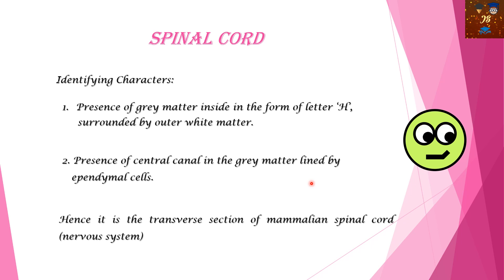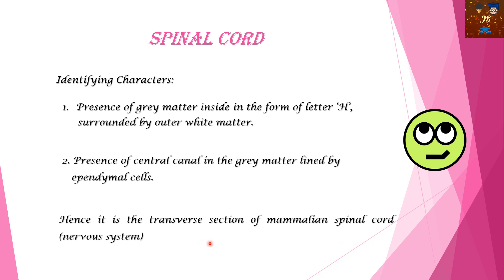So it is the transverse section of mammalian spinal cord. If you have to write in your practical laboratory notebook, you can write the identifying characters one and two, and then write that hence it is the transverse section of mammalian spinal cord. You should specify 'transverse section' because not writing it may imply it could be a vertical section as well.